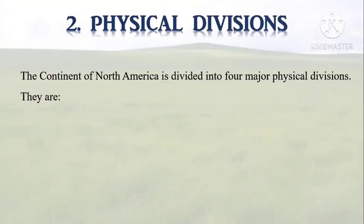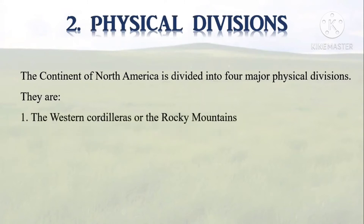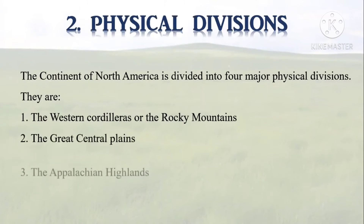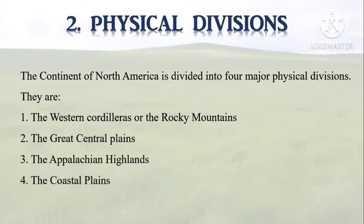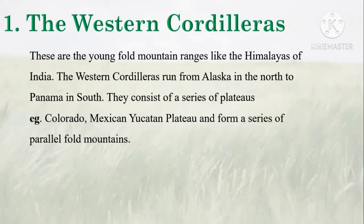Now let's learn about the physical divisions. The continent of North America is divided into four major physical divisions: the western cordilleras or the Rocky Mountains, the great central plains, the Appalachian highlands, and the coastal plains. The western cordilleras are young folded mountain ranges, like the Himalayas of India. They run from Alaska in the north to Panama in the south.